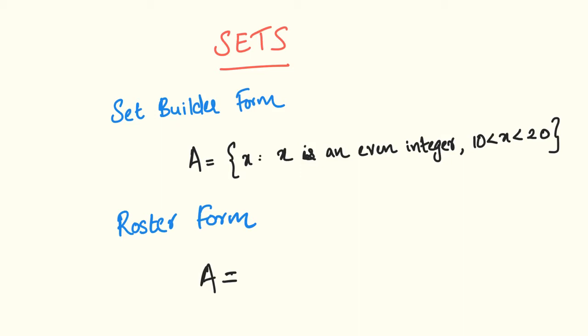In the Set Builder Form, we have a set A equal to all x such that x is an even integer and x is less than 20.